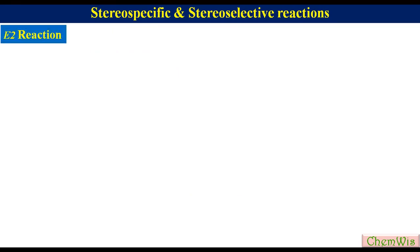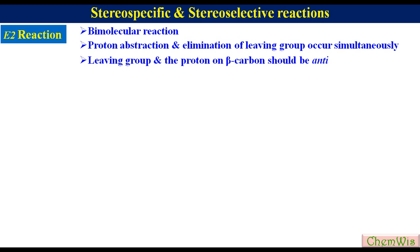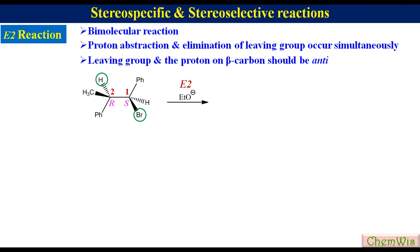E2 reaction. There are three key things to know about E2 reaction: it is a bimolecular reaction; proton abstraction and elimination of the leaving group occur simultaneously; and for elimination to occur, the leaving group and the proton on the beta carbon should be anti to each other. Let's have a molecule with two chiral centers. If we label the chiral centers as 1 and 2, in stereochemical terms this is the 1S,2R stereoisomer. Allowing it to react with ethoxide ion under E2 conditions, the leaving group and the beta proton are anti to each other, so elimination occurs to produce the E-alkene.